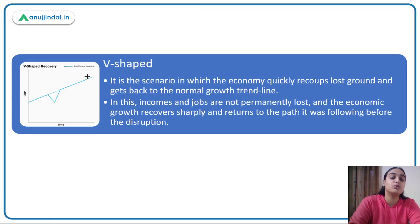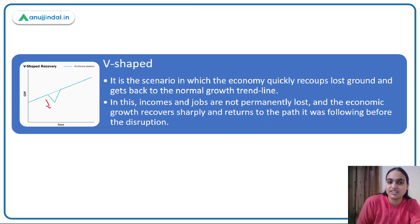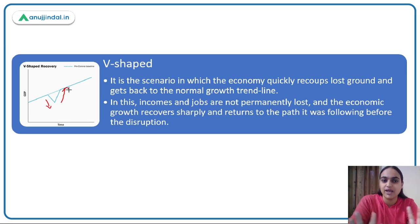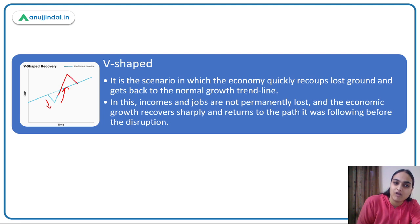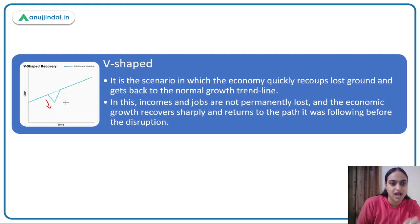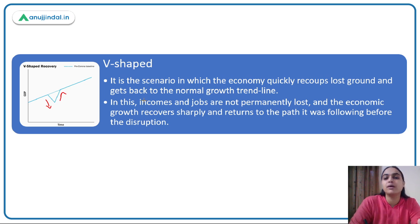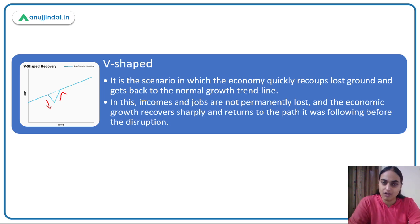Moving on to the V-shaped recovery. Here, whatever loss happened during the disruption is compensated back to the normal growth trend — the economy recoups the lost ground and gets back on the normal growth trend. Unlike Z-shape where we went above the trend, here only the growth loss is recovered. Incomes and jobs are not permanently lost; when the economy starts improving, we come back on the normal growth track.